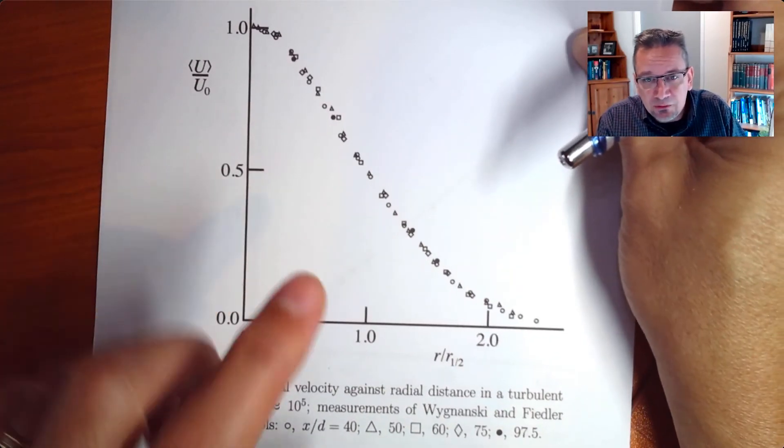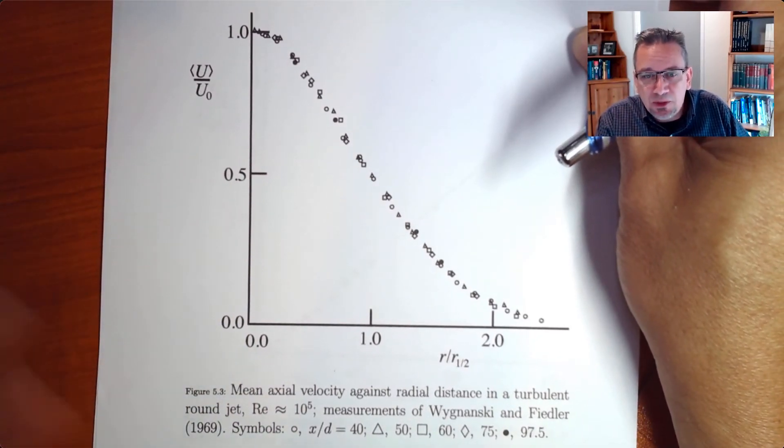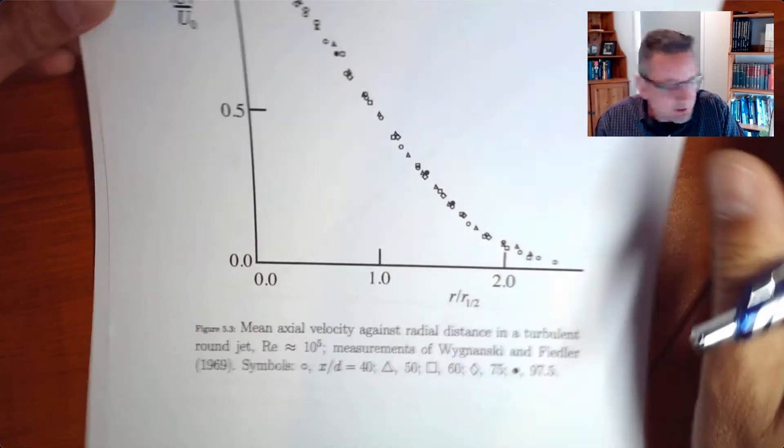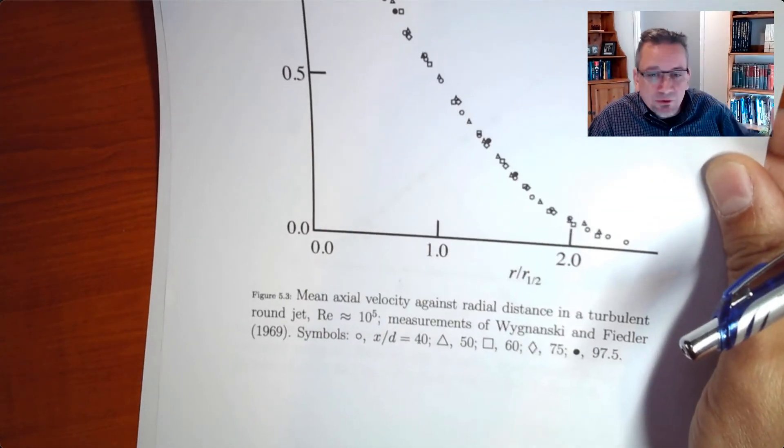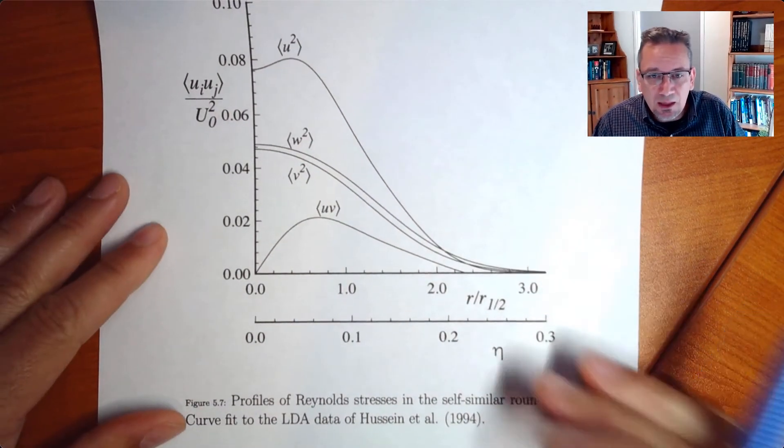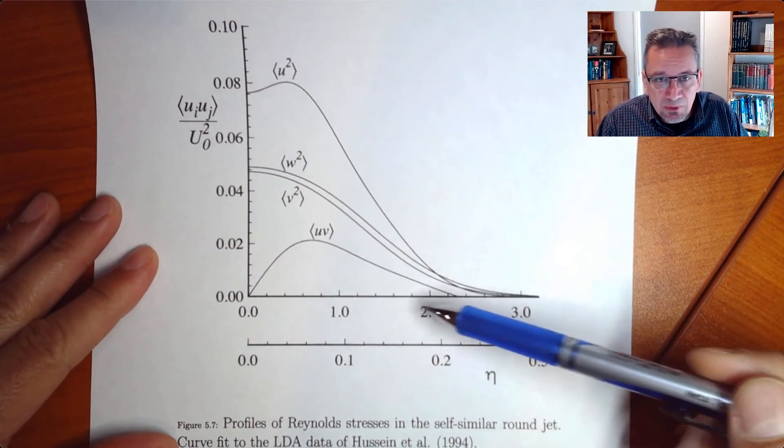So you're doing that now for the mean velocity profile. That means you can have some information about that. But most importantly, you can do that also for other quantities in the flow. And you're going to get similar graphs.